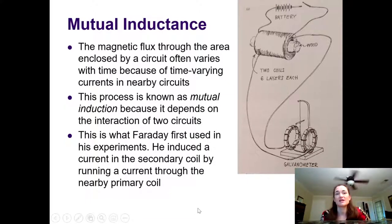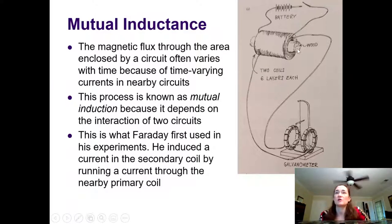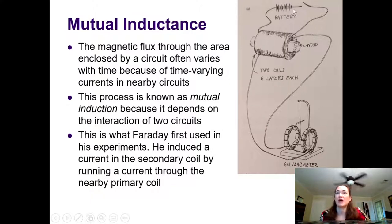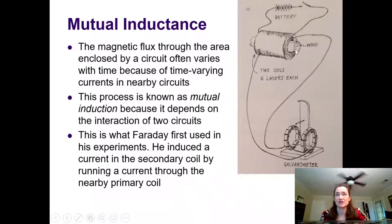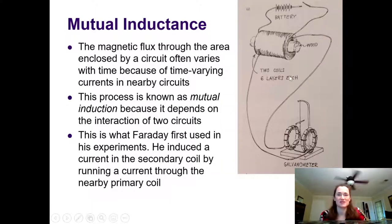As an example of this, let's think back to Faraday's original experiment. He had two coils — the primary coil and the secondary coil. The primary coil was hooked to a battery and a switch, and the secondary coil was concentric with the primary, kind of inside it, as shown in this sketch. They both surrounded a wooden core. This sketch is from Faraday's lab notebook.